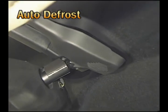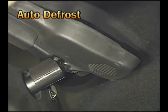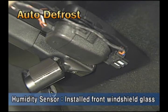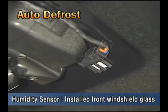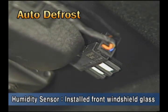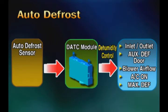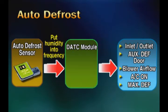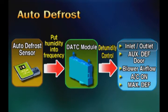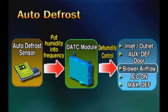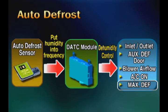Let's look at the auto defrost system. Just under the rain sensor attached to the front windshield glass, a humidity sensor is attached. It detects the humidity on the surface of the front windshield glass in advance and operates the in-out air, auxiliary defrost door, blower wind amount increasing, air conditioning on, and max defrost sequentially to reduce and remove humidity in advance.